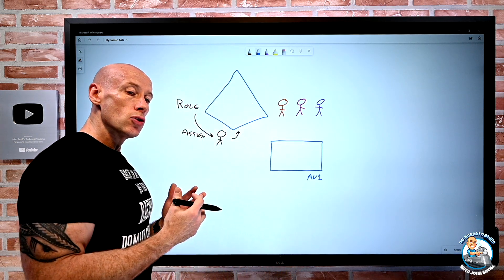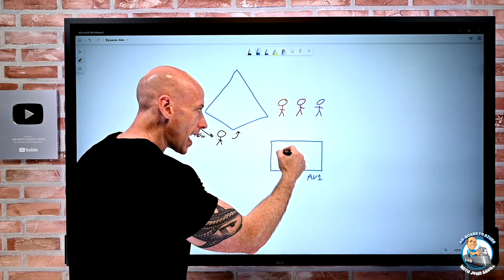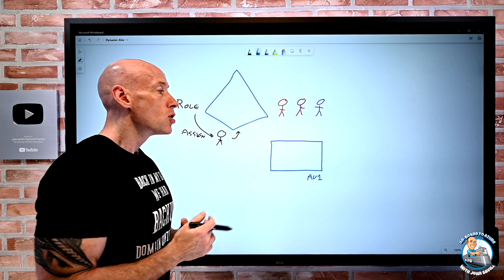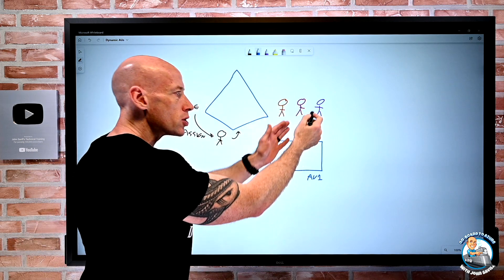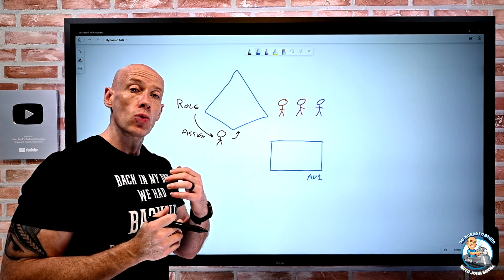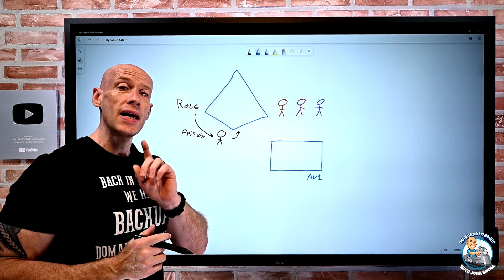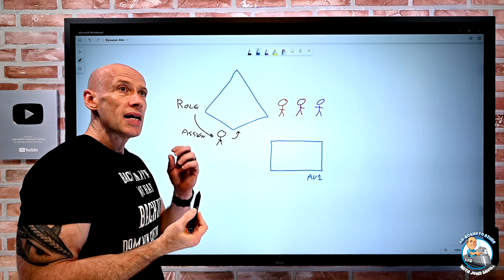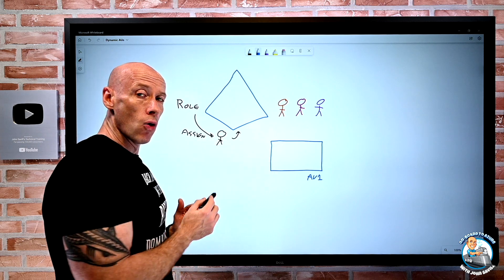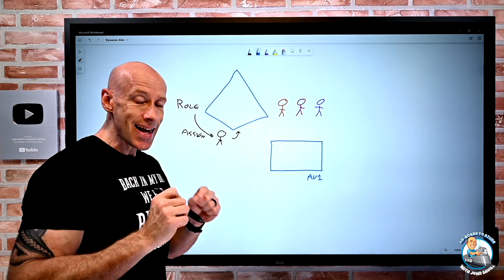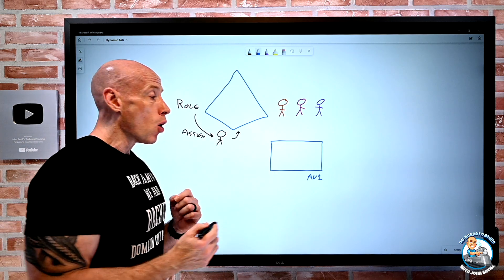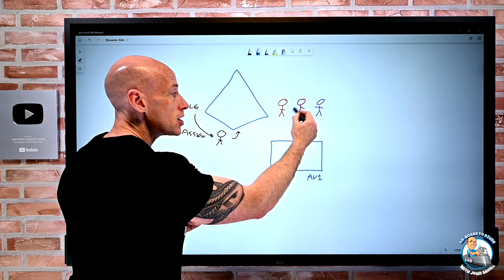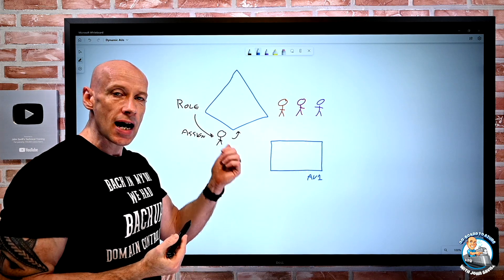What I could do before is I could add users into that administrative unit. So I would add user1 and user2 and user3, etc. I could also add groups. Now, a key point. If I add a group into an administrative unit, it does not give me that role for the users in the group. It's giving me the role for the group object. But if I want the role for the users in the group, I have to actually put the users into the AU as well.